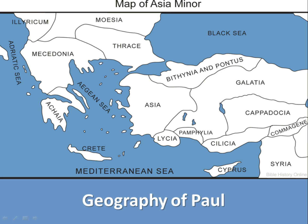His technique was to always go to a synagogue first and declare the gospel. After that synagogue rejected him, oftentimes he was beaten or shipwrecked. He would then go to the Gentiles — wherever he found them praying at a river, that's where he found Lydia — and wherever he found them, he would go to them. But he always went to the Jews first, then the Gentiles.